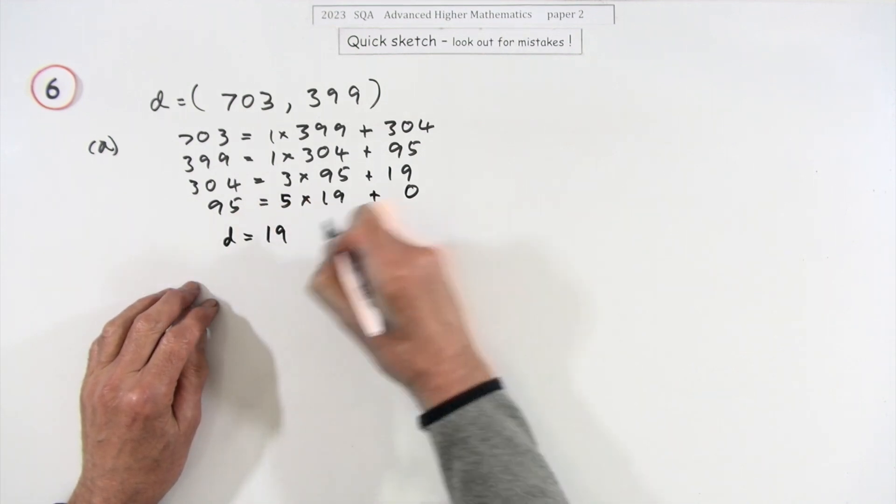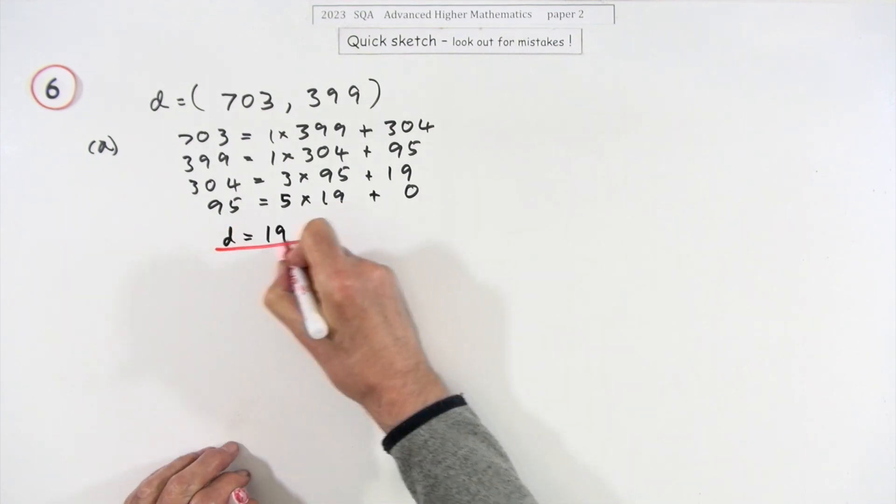So there you are, for the first part, d equals 19. It's just one mark though.